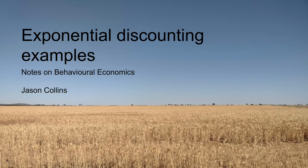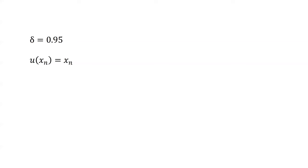Hi, I'm Jason Collins, and in this video I work through some exponential discounting examples. Suppose we have an exponential discounter with discount factor delta equals 0.95 and utility each period of u of xn equals xn.